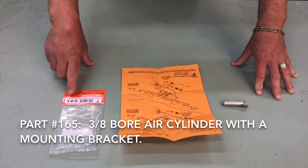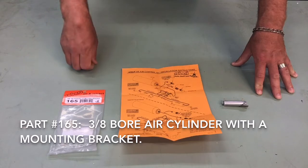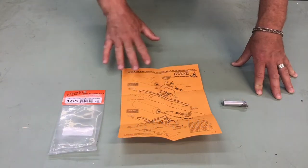So what we have here is part number 165. This is a 3/8 bore air cylinder with a mounting bracket. So I'll show you what comes in the package.